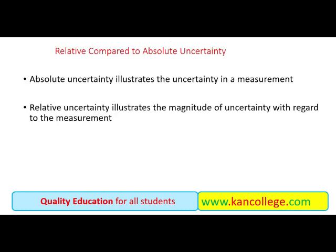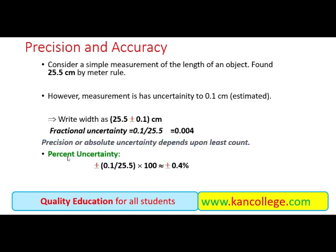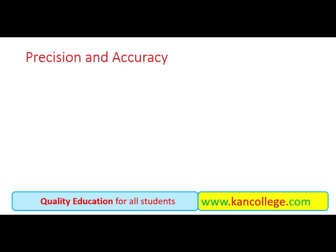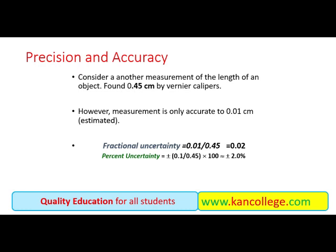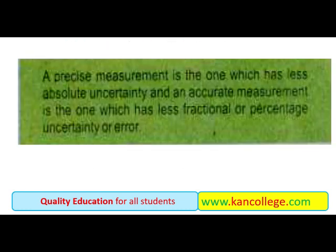So: precise measurement is the one which has less absolute uncertainty, and accurate measurement is the one which has less fractional or percentage uncertainty. For the big measurement of 25.5 cm, absolute uncertainty is 0.1 cm and percentage error is 0.4% — so it is more accurate. When we measured the small value of 0.45 cm with vernier caliper, the total error is 2%, so that has less accuracy. Accurate measurement means the percentage of uncertainty is less — if we measured some physical quantity and the percentage of error is less, then it is a better measurement.